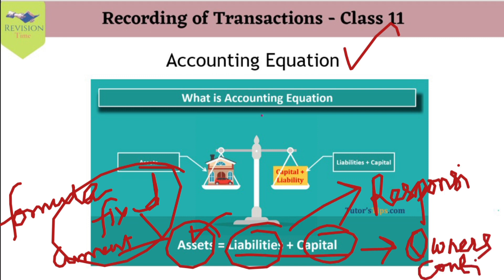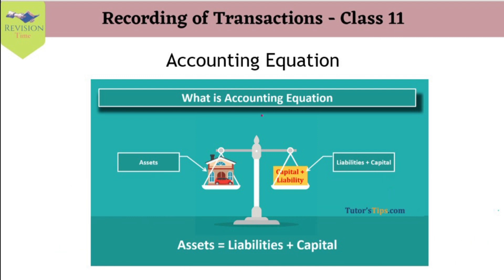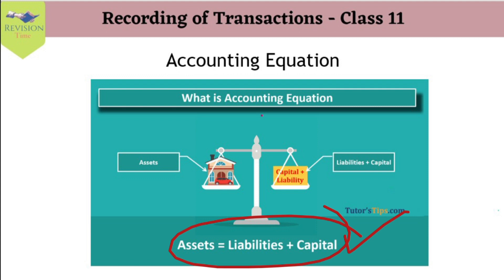Capital is the owner's contribution — whatever the owner brings into the business in cash or any other form is known as capital. The accounting equation states that whatever the business is holding (assets) is always equal to whatever the business is liable for (liabilities) plus the capital invested by the owner. So: Assets = Capital + Liabilities.